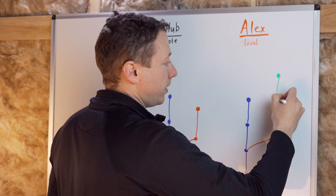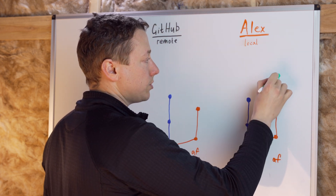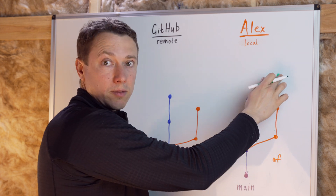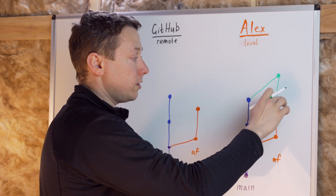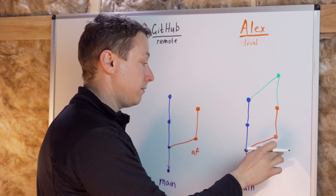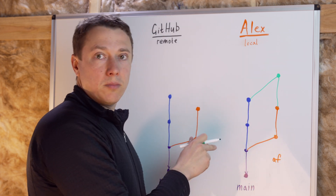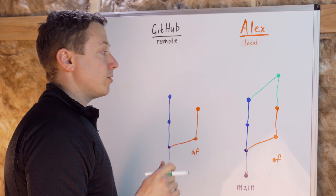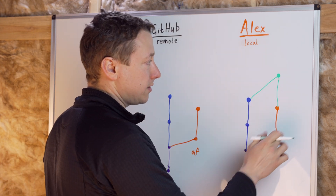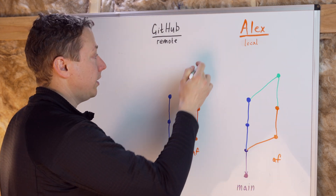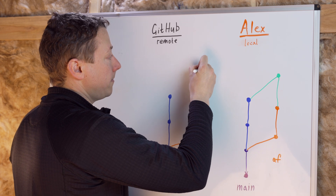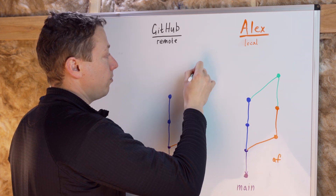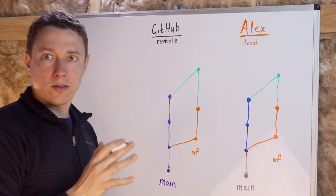This merge commit has two parents: the latest commit from your feature branch and the latest commit from main. Now that commit has all the changes that you made in the feature branch and your team made in the main branch, and you can test and that looks good. So if you decide to push that up, that will also create the same merge commit on the remote and it'll look exactly the same.